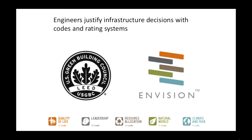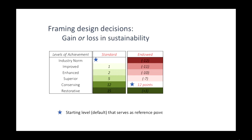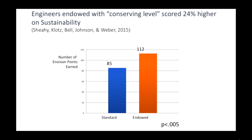We asked whether changes to the default toward the larger-later benefit option also work with professional decision makers. We looked at infrastructure engineers and architects who make decisions about how sustainable to be in their designs using rating systems — we worked with Envision, which applies to a broader range of infrastructure designs. The current software uses industry standards as the implicit default, and you earn points by doing better. We changed it: we gave people the conserving option as the default, so they would lose points by being less ambitious. Even professional engineers endowed with the conserving default scored 24% higher on sustainability.